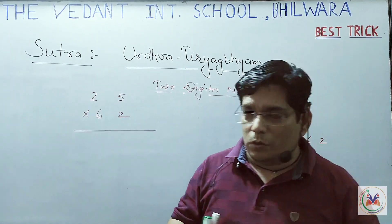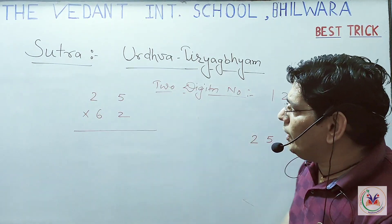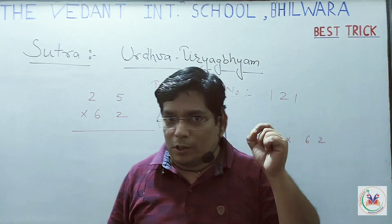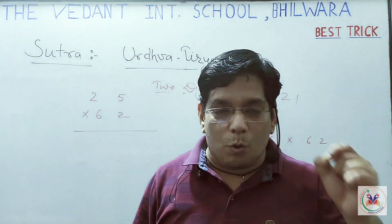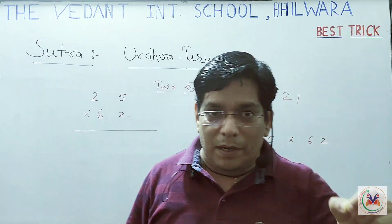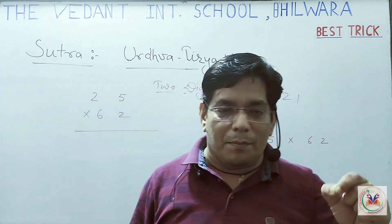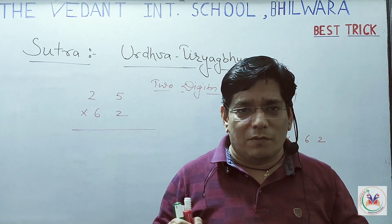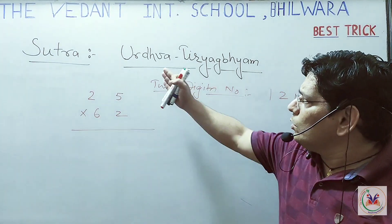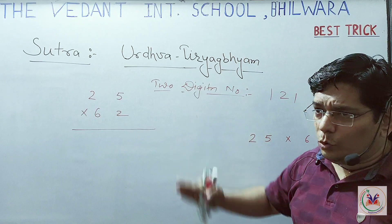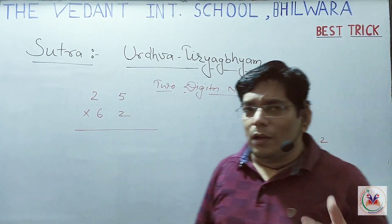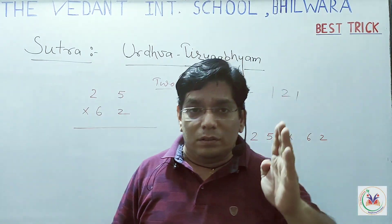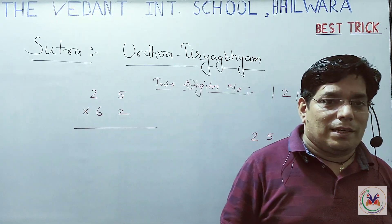We are going to discuss a method for two-digit multiplication. That is based on the Vedic Math sutra 'Urdhva Tiryakbhyam.' This is actually not just a sutra — it defines the process of calculation. 'Urdhva' and 'Tiryakbhyam' are two different words: Urdhva means Vertical and Tiryakbhyam means Cross Multiply.